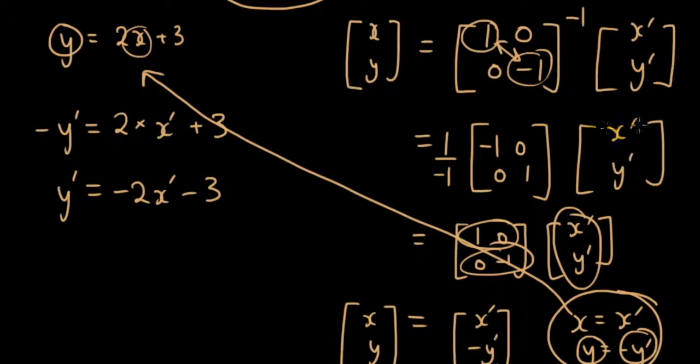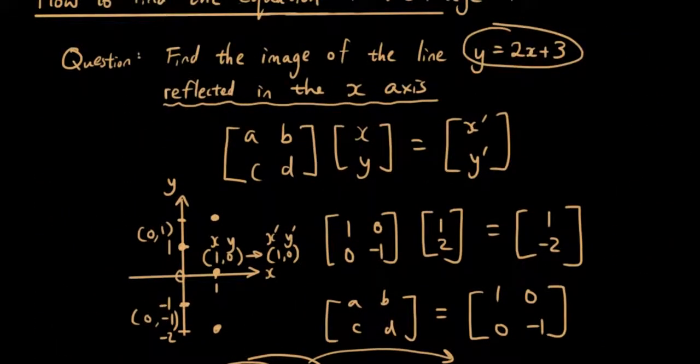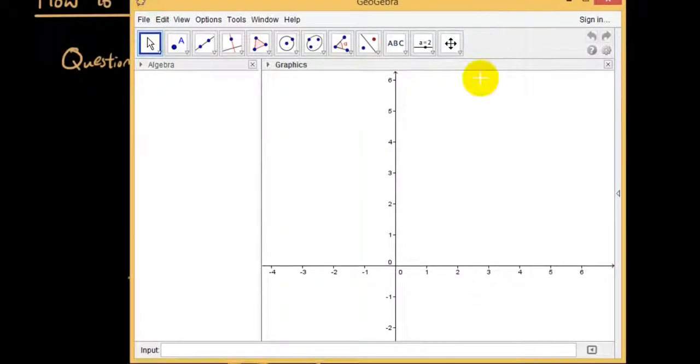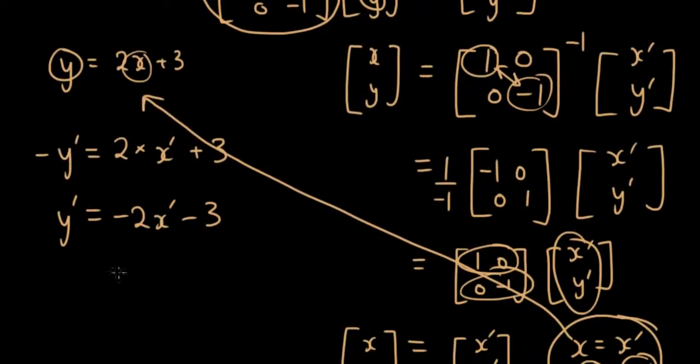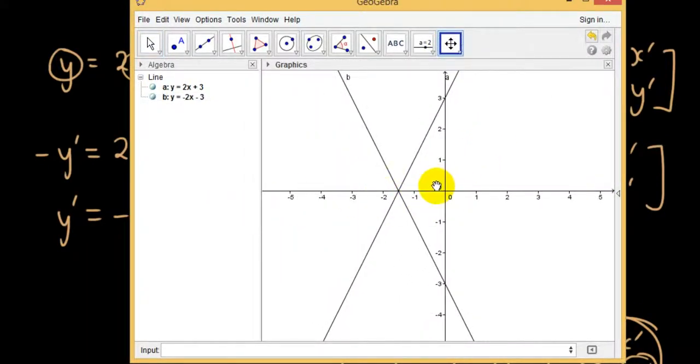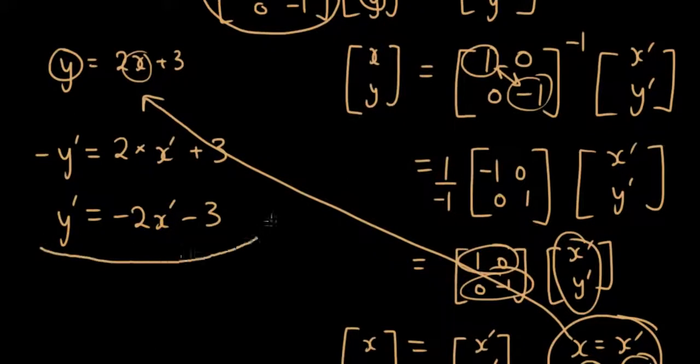Now let's draw the two curves and see if they have been reflected in the x axis. I'm just going to draw it in Geogebra, so it's a bit quicker. So the first curve is y equals 2x plus 3. And then if I reflect it in the x axis, the image that I get is y equals negative 2x minus 3. And indeed, it is a reflection in the x axis of my original curve. Alright, so this is the answer. This is the image of my curve after the transformation.